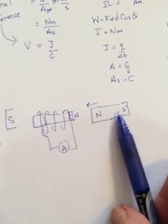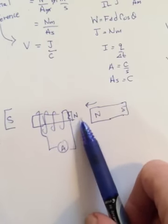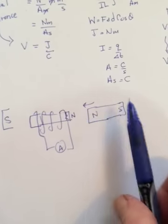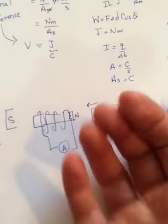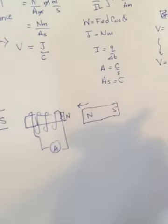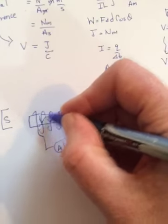So as I bring this bar magnet closer, the current's going to flow in this wire in such a way to try to prevent it from coming closer, to try to resist the change. So to resist the change, it would want a north facing it, so the current would flow down in the front here.